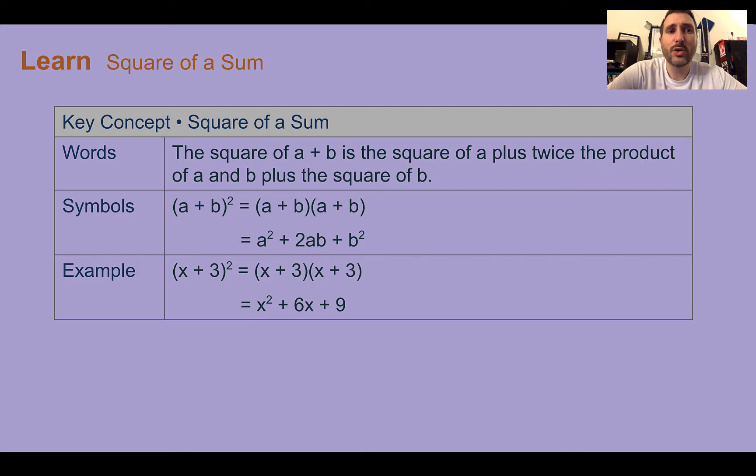Let's learn square of a sum. Our key concept here is square of a sum. For this, we're going to look for problems that look like a sum, so a binomial with addition, to the second power. This follows a special pattern that the square of the sum is the square of a plus twice the product of a and b plus the square of b.